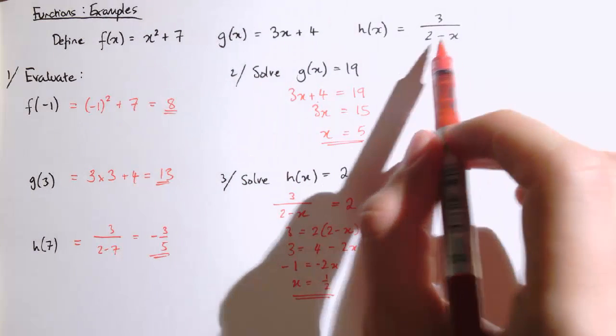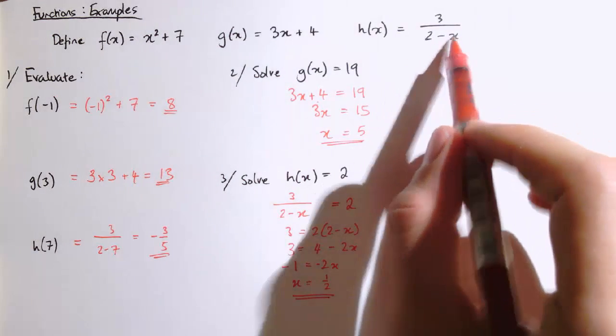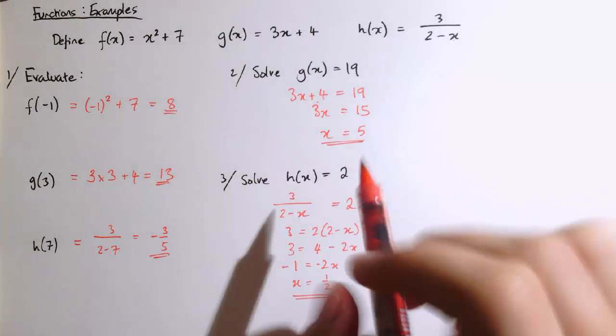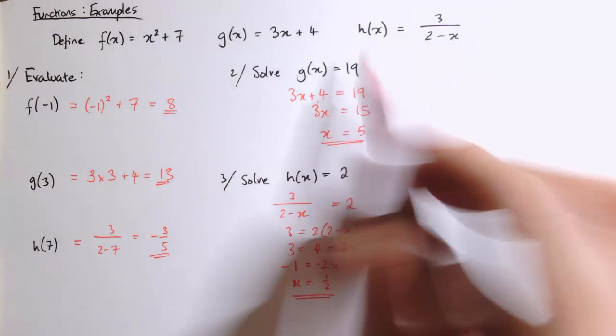And you can check if you put 1 half into here, that we get 2 minus 1 half is 1 and 1 half. And 3 divided by 1 and 1 half is 2, because 3 is twice 1 and 1 half. So that's solved the problem.